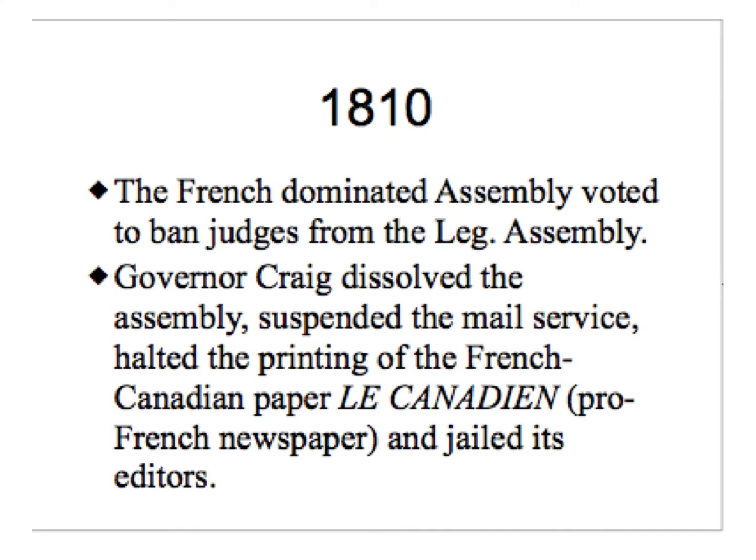In 1810, the French-dominated Assembly voted to ban judges from the General Assembly. This resulted in the governor, Craig, dissolving the Assembly. He also suspended mail service to the French-dominated press, and sent its producers, editors, and writers to jail.